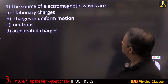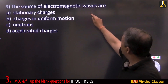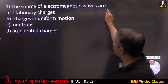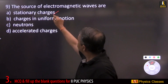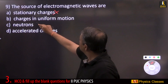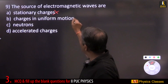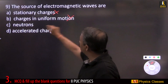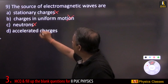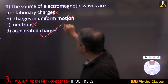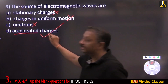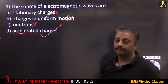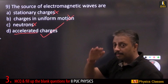The source of electromagnetic waves: stationary charges and charges in uniform motion are not sources; neutrons are not either. The correct answer is accelerated charge — EM waves are produced due to the oscillation, i.e., acceleration, of charged particles.